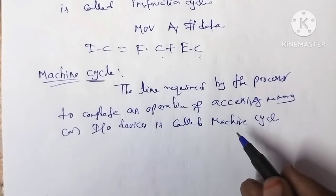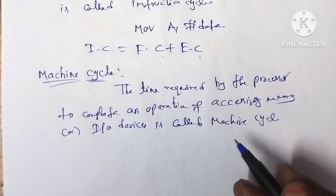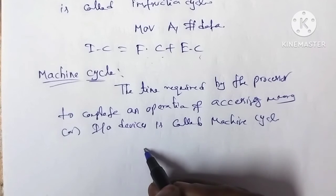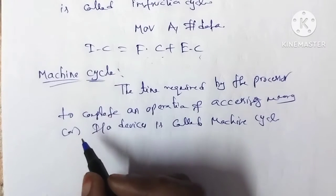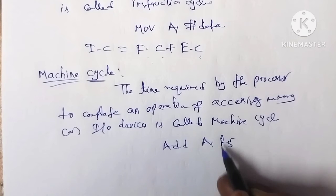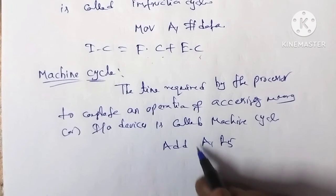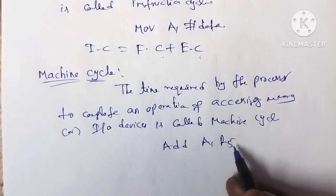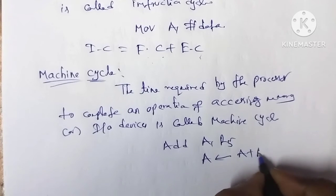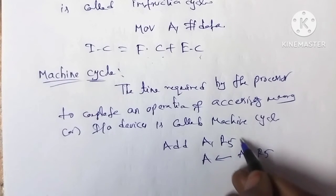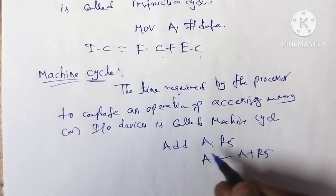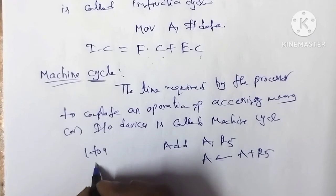Operations performed include memory read operation, memory write operation, I/O read operations. For example, the instruction ADD A, R5 — where R5 content is added to the accumulator register content and the result is stored in the accumulator. This instruction can execute using 1 to 4 machine cycles on the 8051 microcontroller.